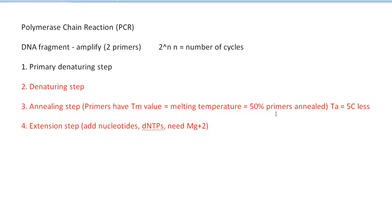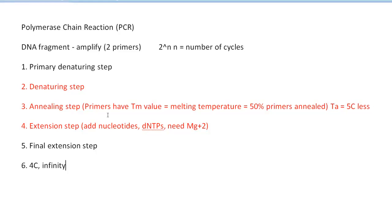You repeat the denaturing, annealing, and extension cycle for a set number of cycles — usually between 30 and 40. After that, people sometimes do a final extension step to make sure the polymerase goes all the way through and you have fully extended products. This is more important if you have a large template, and is somewhat optional. Finally, you can set the thermocycler to hold at 4°C indefinitely — so if you're running it late, you can check your results the next morning.